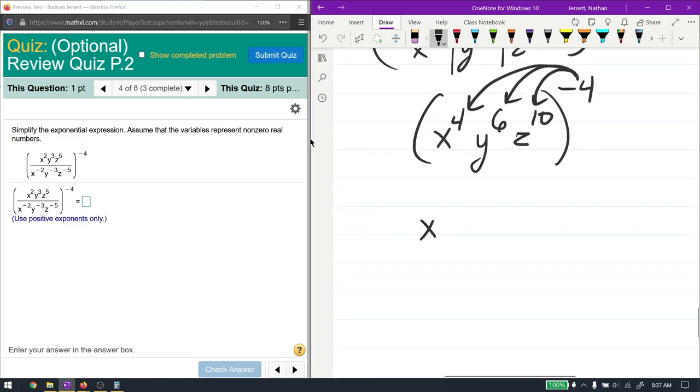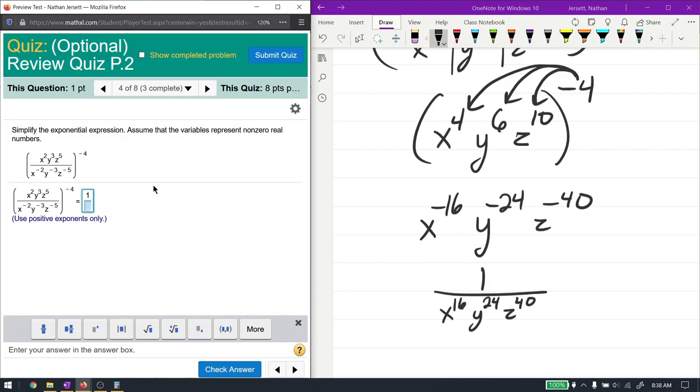That becomes x to the negative 16, y to the negative 24, and z to the negative 40. And you'll see it says use positive exponents only, meaning all of this stuff needs to flip into the denominator. Our final answer is going to be 1 over x to the 16, y to the 24, and z to the 40. Let's see if that's correct. Y to the power of 24, and z to the power of 40. And it is.